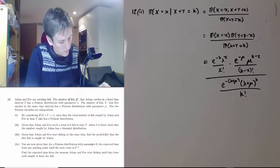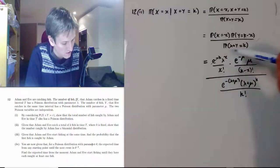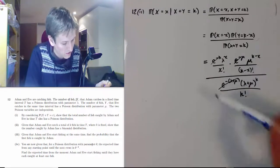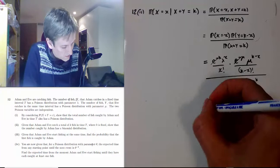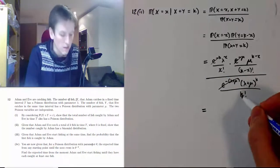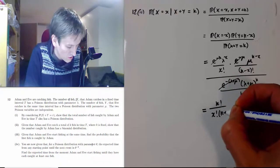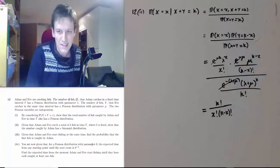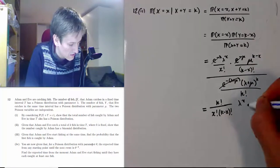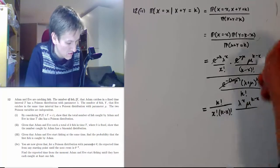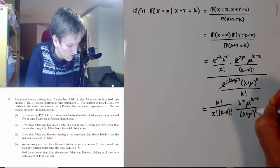It's a bit of an ugly fraction, but with a little thought we can see a fair amount cancels. The e to the minus lambda times e to the minus mu cancels with e to the minus (lambda plus mu) in the denominator. What remains is k factorial over x factorial times (k minus x) factorial, multiplied by lambda to the x times mu to the (k minus x) divided by (lambda plus mu) to the k.